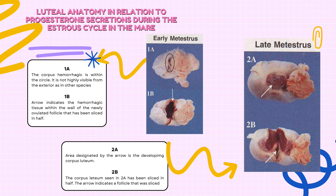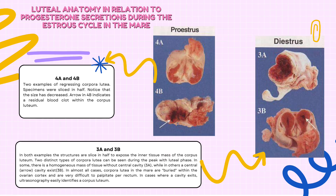For late metestrus, 2A shows the area designated by the arrow as the developing corpus luteum. In 2B, the corpus luteum seen in 2A has been sliced in half. The arrow indicates a follicle that was sliced. In proestrus, 2 examples of regressing corpora lutea are shown. Specimens were sliced in half. Notice that the size has decreased. The arrow in 4B indicates a residual blood clot within the corpus luteum. These two structures are sliced in half to expose the inner tissue mass of the corpus luteum.